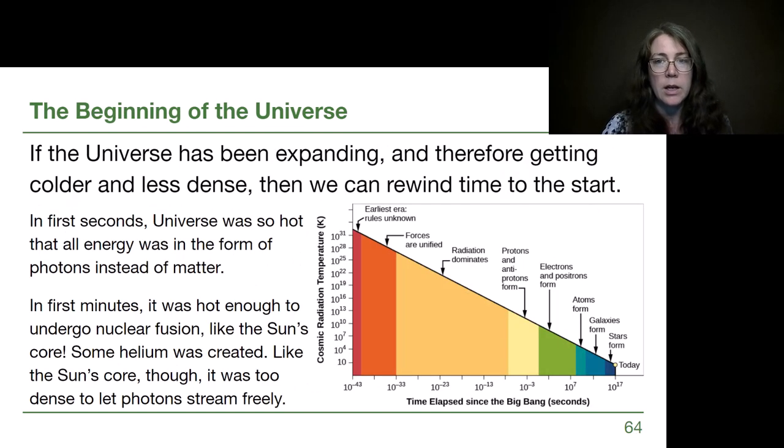All right, so if the universe has been expanding this whole time and it's getting colder and less dense over time, then what we can do is rewind because this colder and less dense is really the core idea of the whole expanding universe model. As anything starts to expand, it cools off and it gets less dense. Less dense is by definition what's happening when we expand.